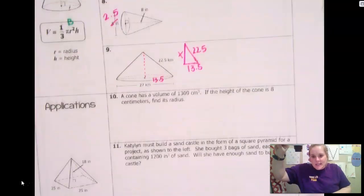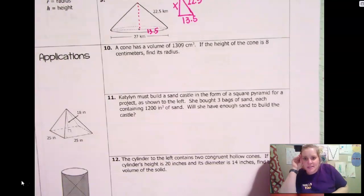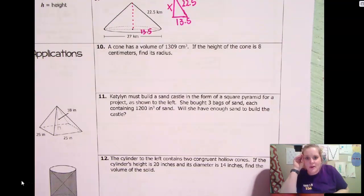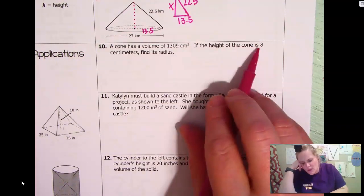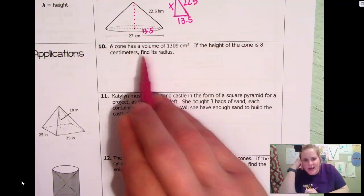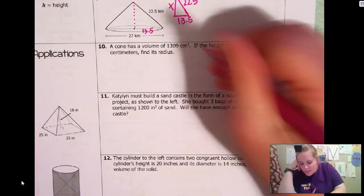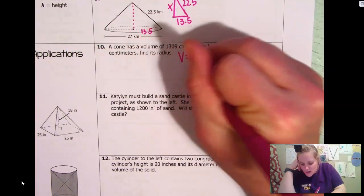Number 10, our applications. If we look at number 10, it says a cone has a volume of 1,309 centimeters cubed. So this is the volume. They want the height of the cone. I'm sorry. The height of the cone is 8. Find the radius.